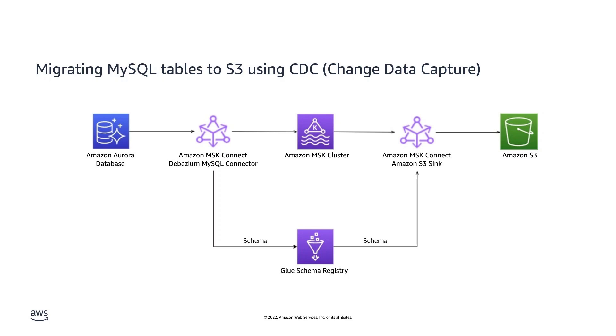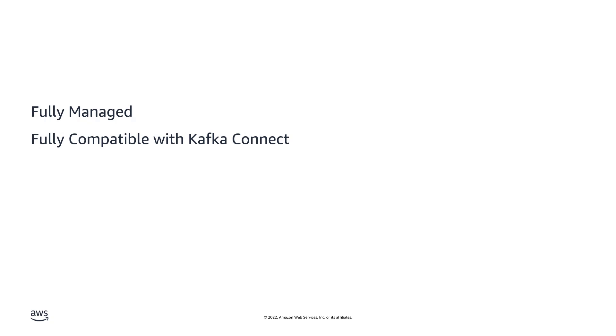On the sync side, an Amazon S3 sync connector retrieves the corresponding schema from the Glue Schema Registry and deserializes the records streamed through the MSK cluster. The sync connector then batches the records per partition and stores them in S3 buckets. This MSK Connect integration is both no-code and serverless. With MSK Connect, you can run fully managed Kafka Connect clusters, eliminating the need to provision and maintain the cluster infrastructure.